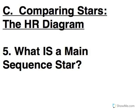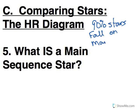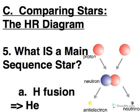We saw with the HR diagram that 90% of all stars fall on the main sequence, and so we call them main sequence stars. But what is a main sequence star? Why are these stars grouped together? The defining characteristic of a main sequence star is that it generates energy through hydrogen fusion.